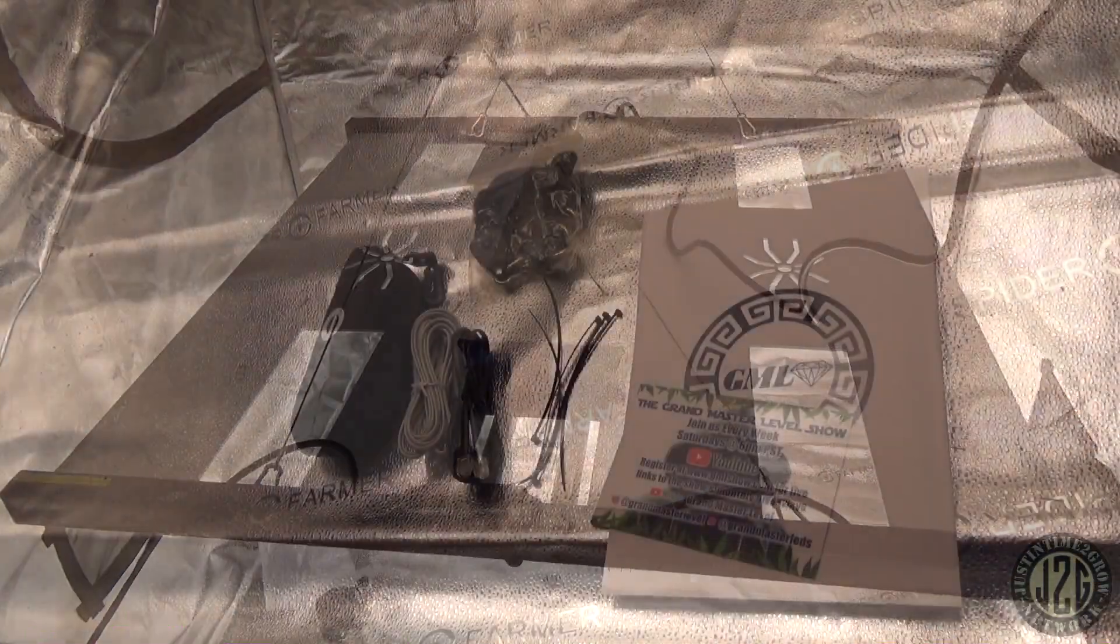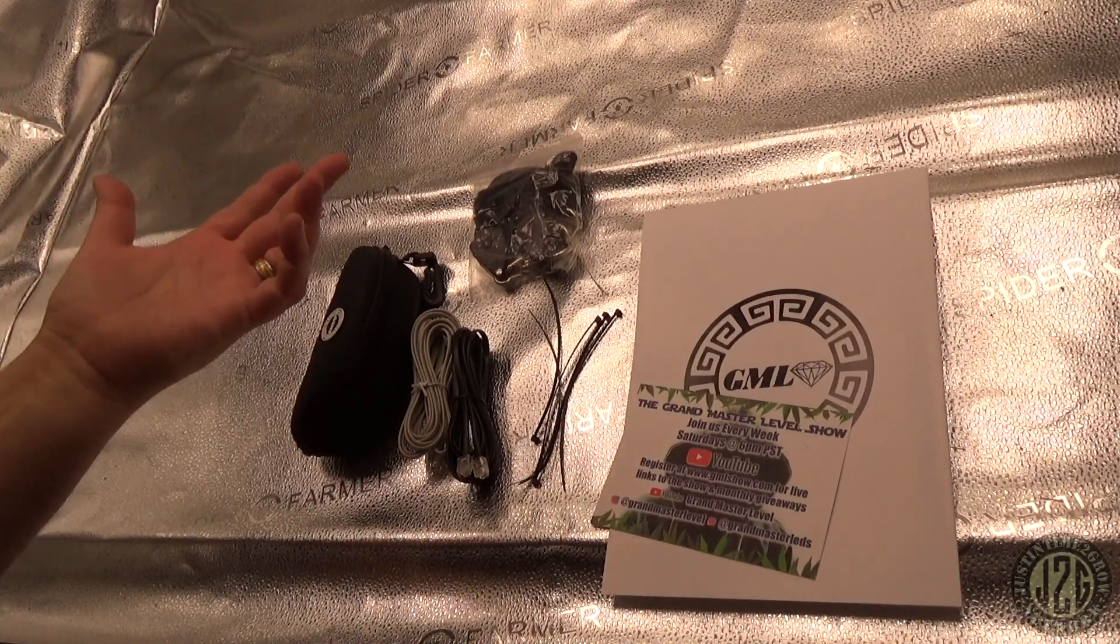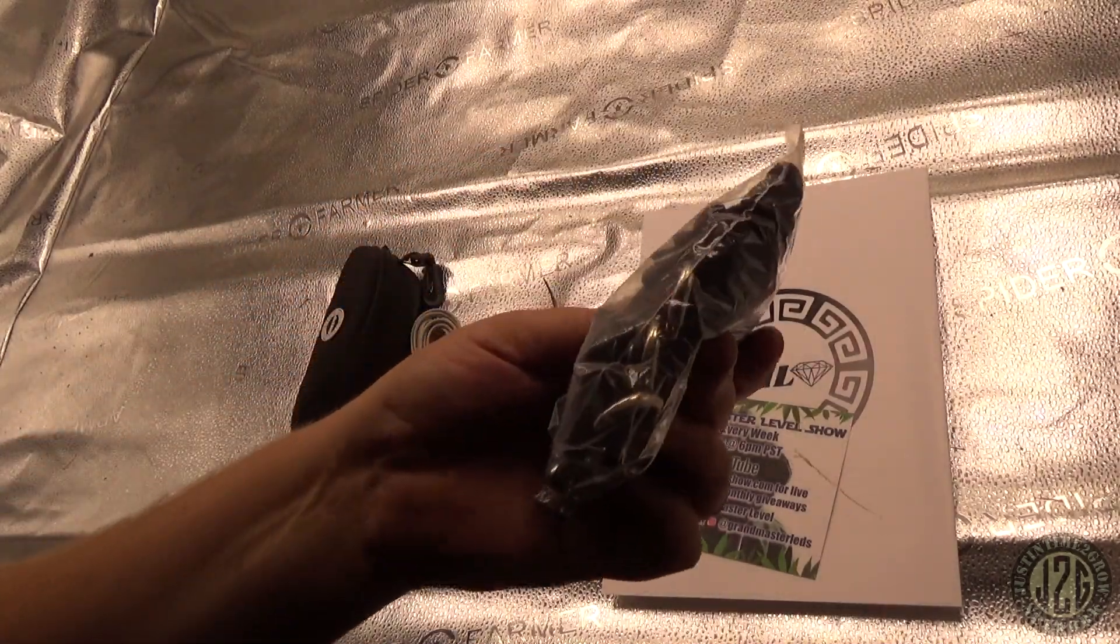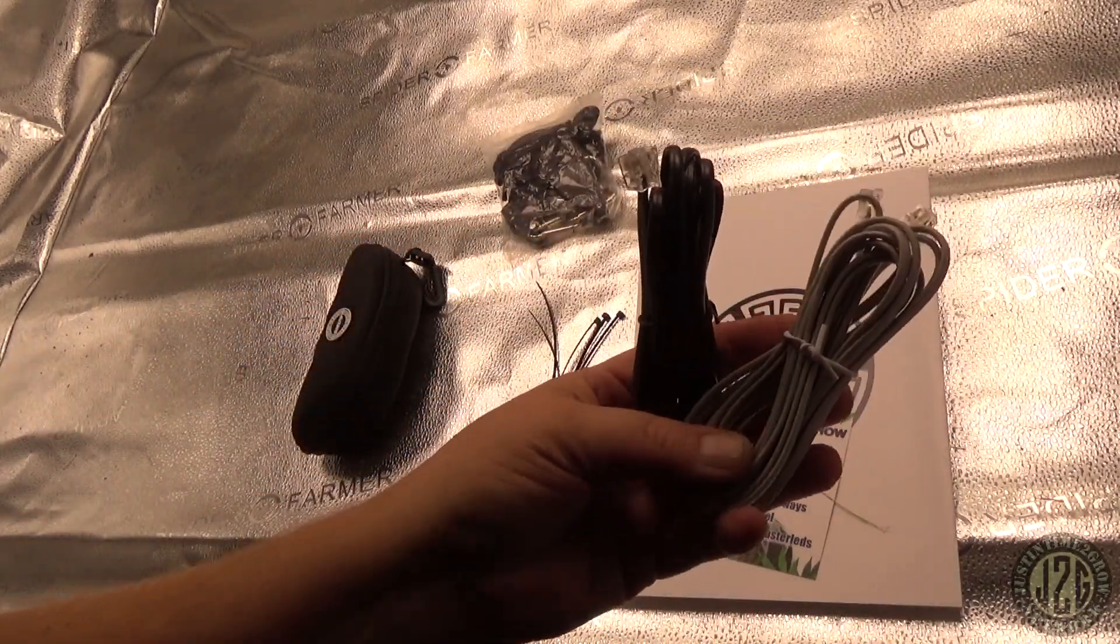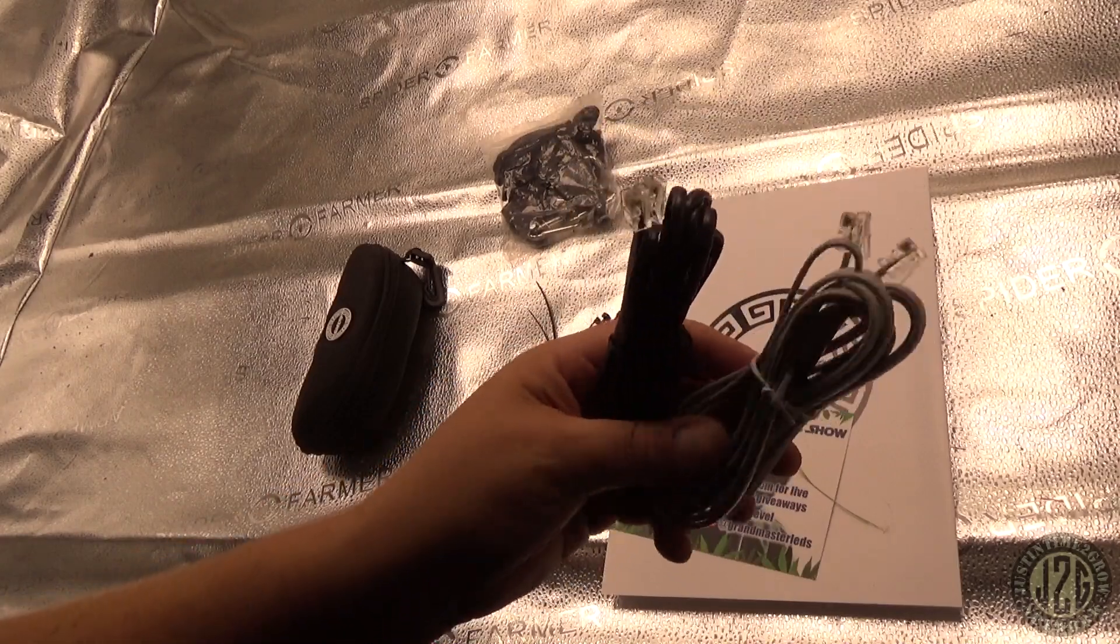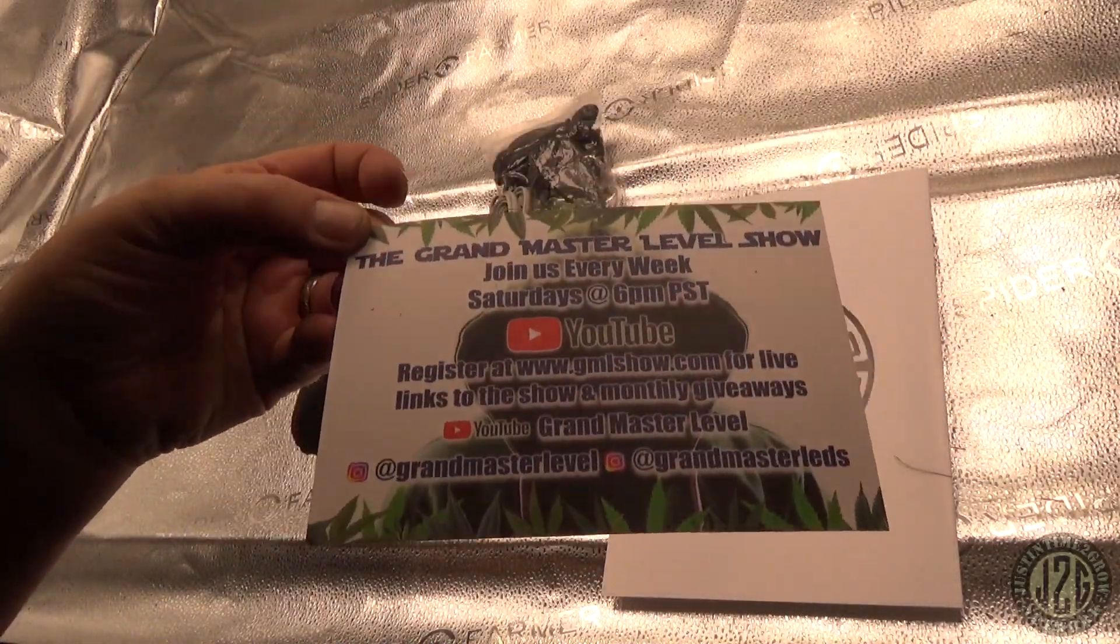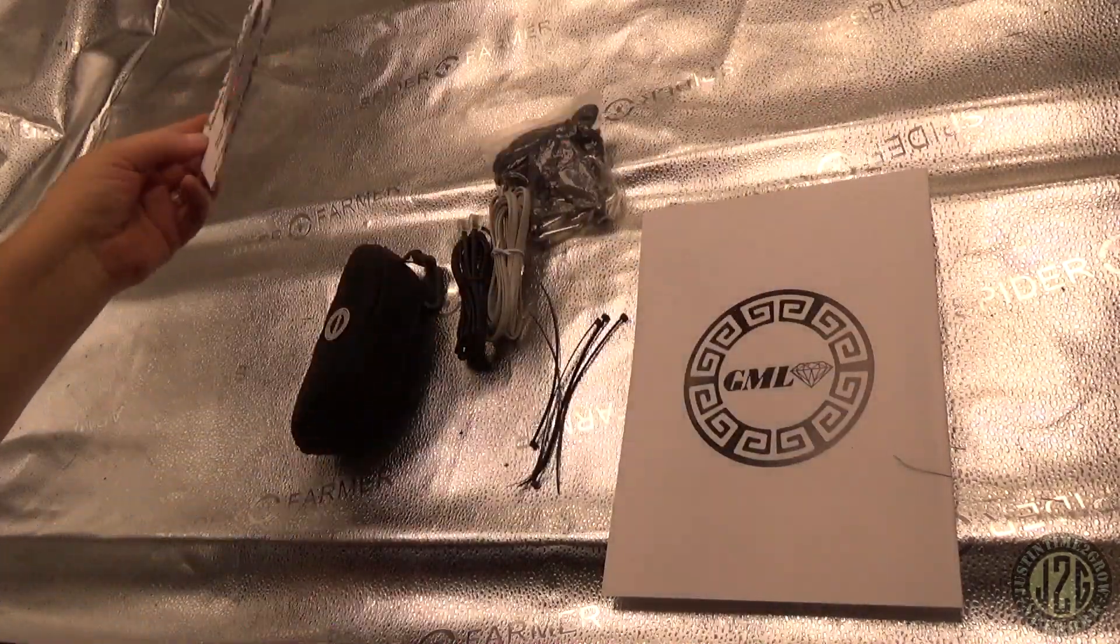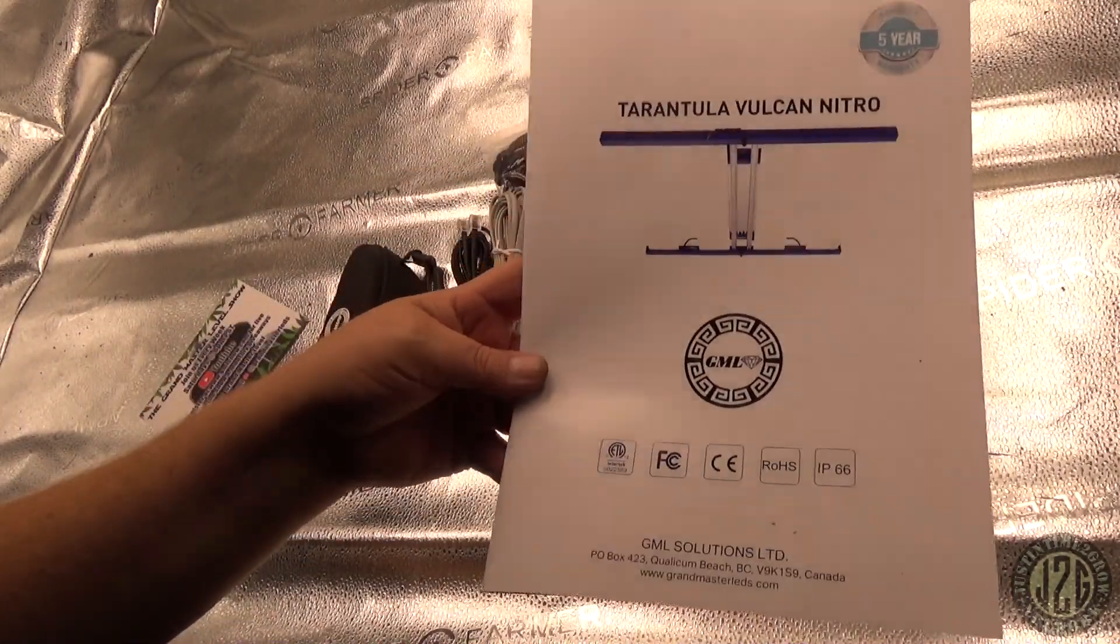Alright, so this is what you get when you open the box. Of course you get the light, the driver, the power cord, and the hanging kit. You also get the metal gear rope ratchets. We've got both the daisy chain cords and I believe you can use these also to hook up to some controllers. We've got of course the GML Show little info graphic there - awesome. This does have a five-year warranty, it's all over their website.